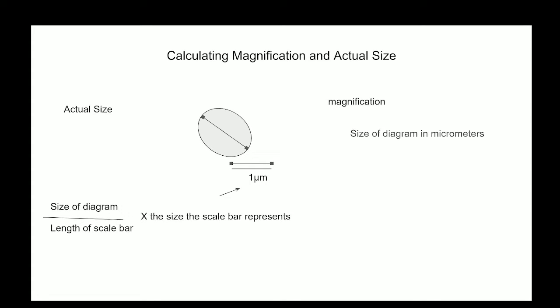Magnification is the size of the diagram in micrometers divided by the actual size of cells in micrometers. If you want to convert one centimeter into micrometers, you multiply by 10,000.